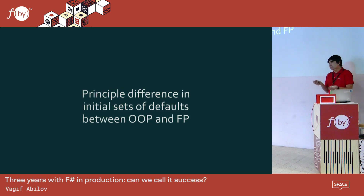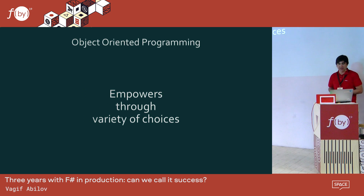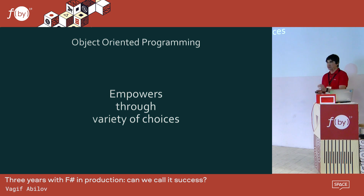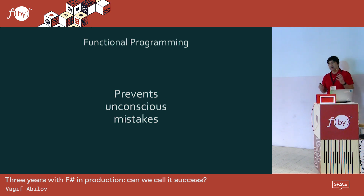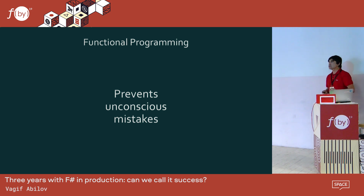These are fundamental differences in the set of initial defaults between functional programming and OOP. In object-oriented programming, it's really powerful and gives you a variety of choices, but you have to be very careful and disciplined. While in functional programming, it leads you toward preventing unconscious mistakes, so you can focus on domain-related things. It also gives you a path to concurrency.